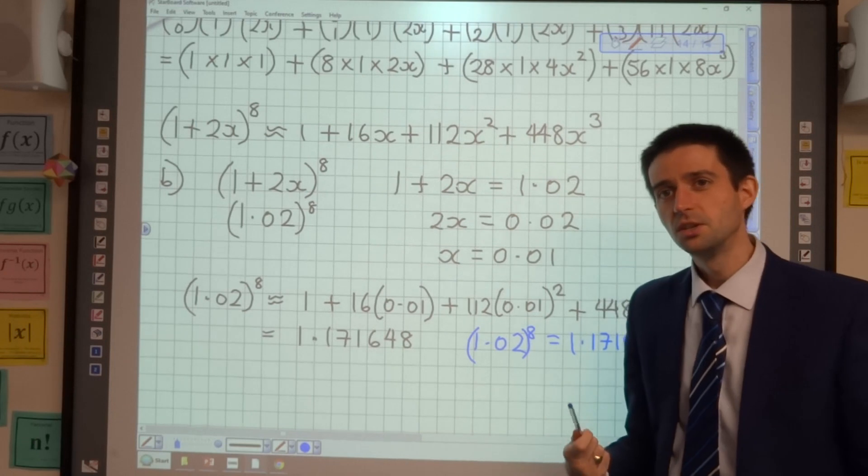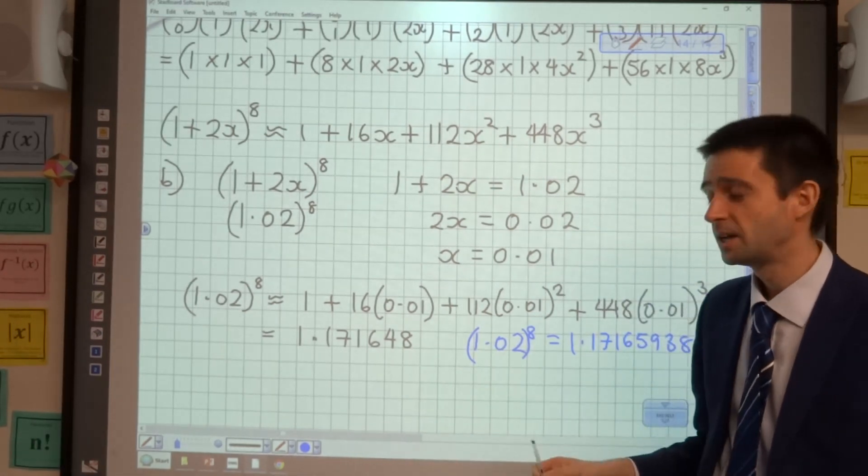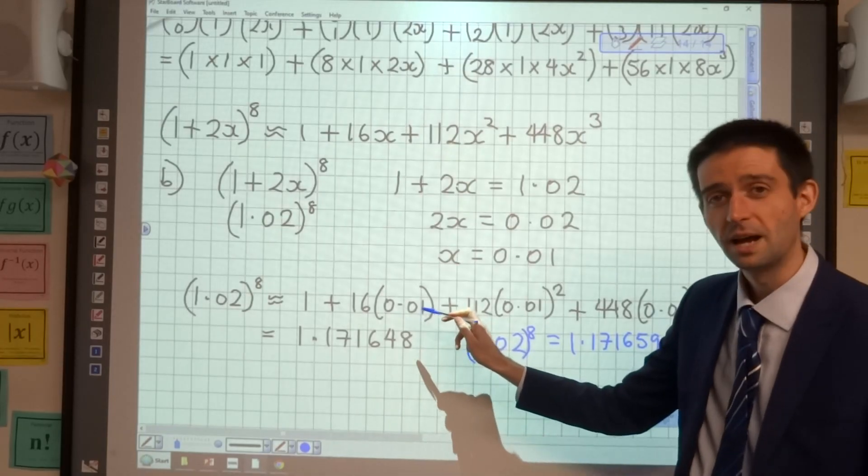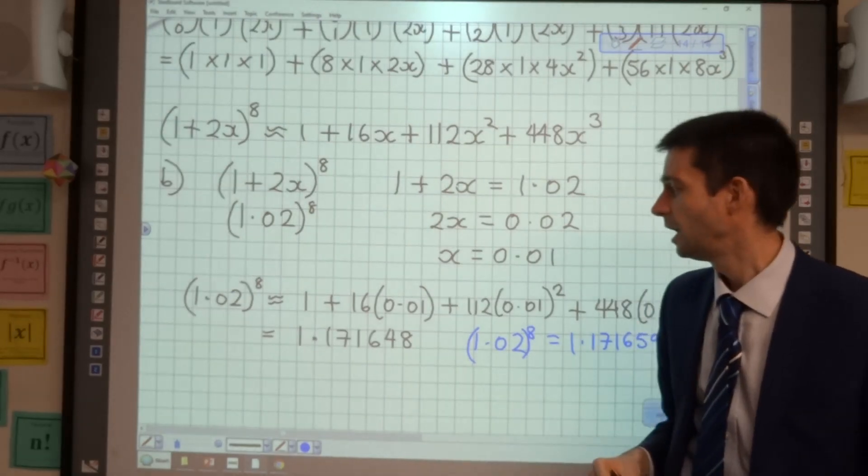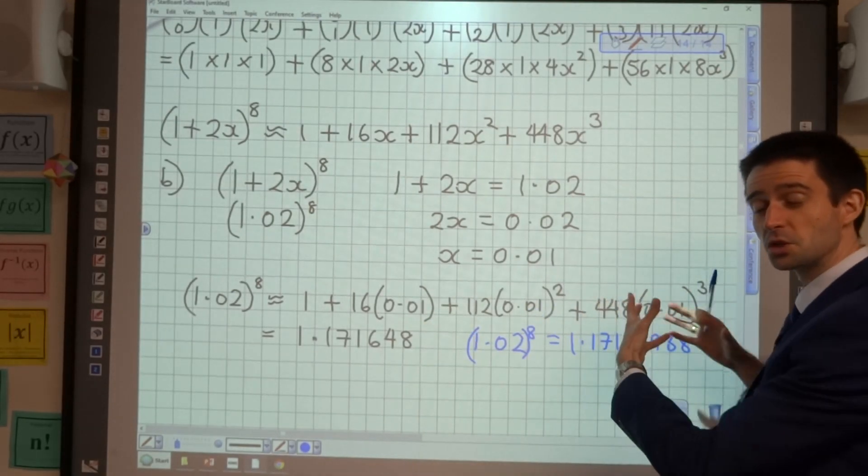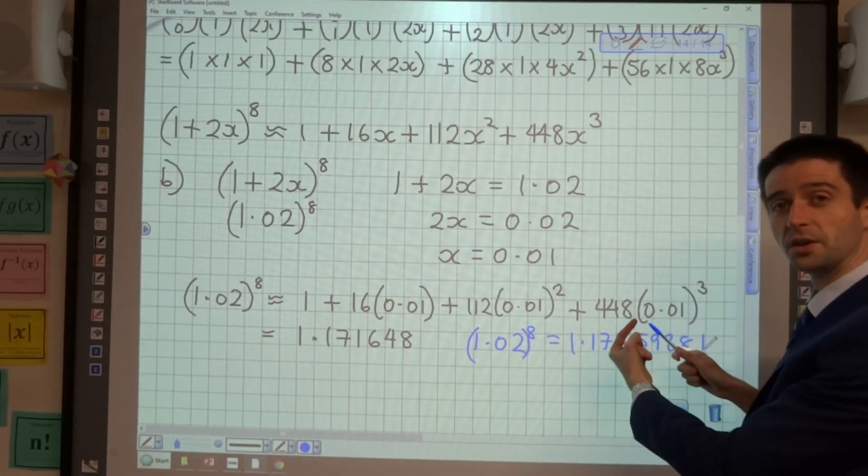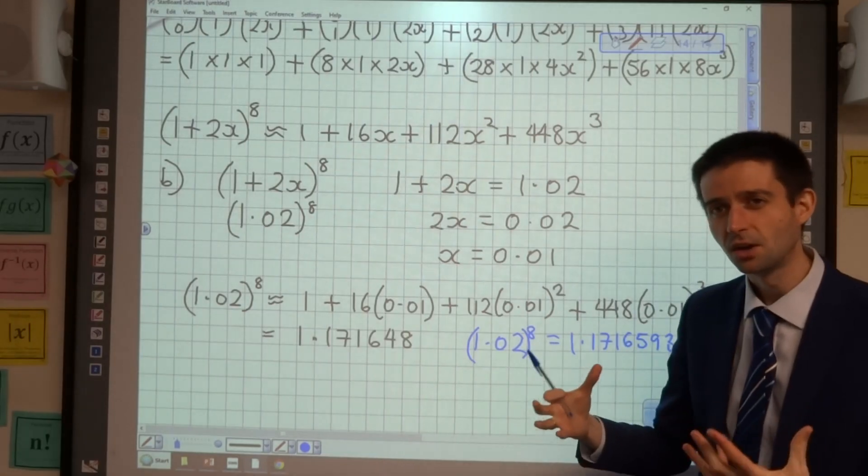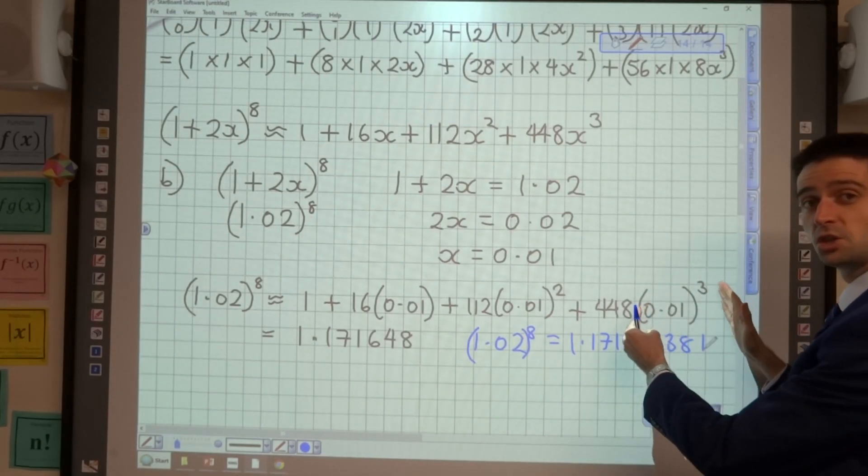Now, the reason that we've got something quite close is that these expansions for approximations are quite good for small values of x. The reason they're good for small values and not so good for bigger values is because with a small value of x, the larger power you use, the smaller that becomes. So if you think (0.01)^8 is going to be a tiny, tiny, tiny number. So it doesn't matter that we've stopped the expansion at x cubed.